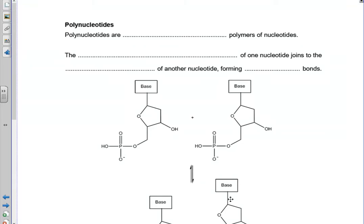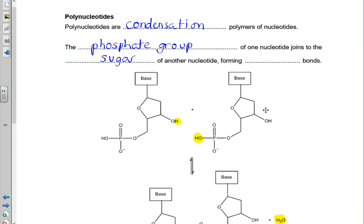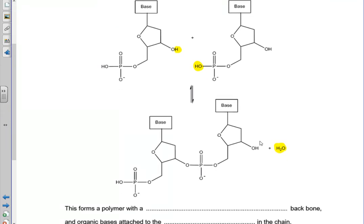The phosphate of one nucleotide joins to the sugar of another nucleotide. This forms a phosphodiester bond. On the diagram, I've highlighted the atoms that are eliminated. So the OH from the phosphate group and the hydrogen that's part of the sugar are eliminated during the condensation reaction, and the two nucleotides are joined together and water is formed.